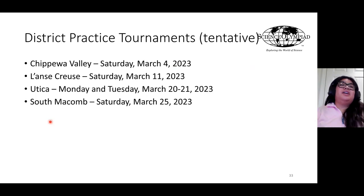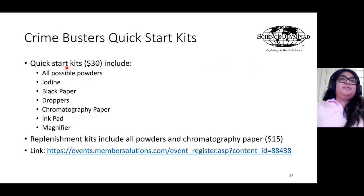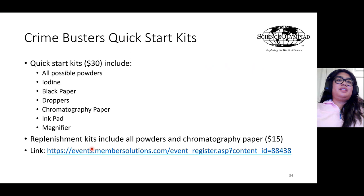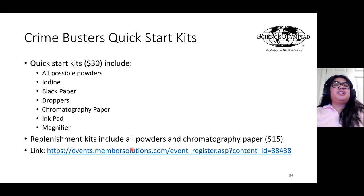These are the tentative dates for each of the district practice tournaments. I will be running a practice tournament at each of these events and also running the official tournament. There are Crime Busters Quick Start Kits available for $30, which include all the possible powders for this event, as well as iodine, black paper, droppers, chromatography paper, an ink pad, and a magnifier. There are also replenishment kits that include all powders and chromatography paper, available for $15 — both available at the link provided.